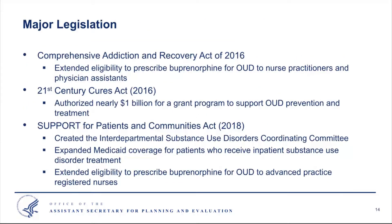My name is Daniel Schwartz and I'm going to talk about what Congress has been doing to address the opioid crisis. Over the past few years, Congress has been very active in passing legislation to fortify the national response to the epidemic. The Comprehensive Addiction and Recovery Act of 2016, or CARA, extended buprenorphine prescribing authority to nurse practitioners and physician assistants, massively expanding the workforce that can treat individuals with opioid use disorder. The 21st Century Cures Act authorized nearly $1 billion for grants to support state and tribal communities, enabling states to distribute naloxone to first responders and create programs that initiate medication-assisted treatment within emergency departments after an overdose.